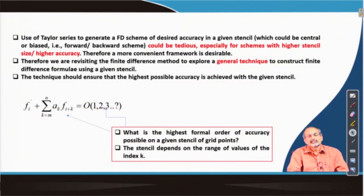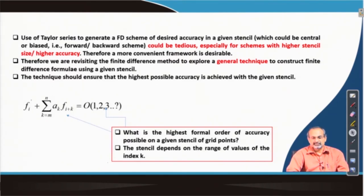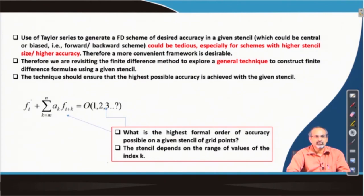Using Taylor series to generate a finite difference scheme with desired accuracy on a given stencil — central or biased — can sometimes be quite tedious, especially if you have a large stencil, say a five-point stencil. You will find that manipulating the Taylor series to arrive at an expression for the derivative becomes increasingly more complex. However, higher stencil sizes are usually associated with higher accuracy, and therefore when you look for higher accuracy in approximating the derivatives, you very often have to use them.